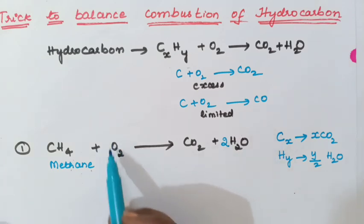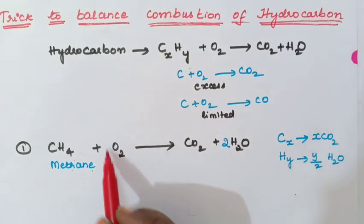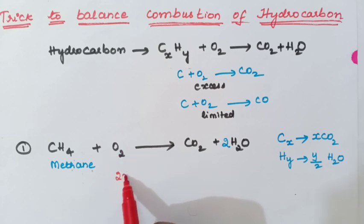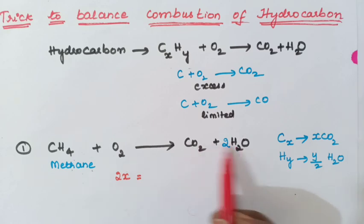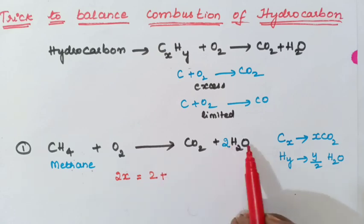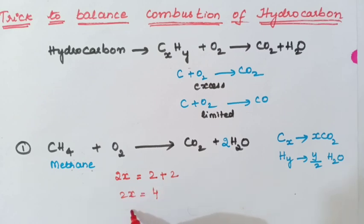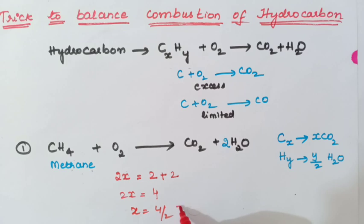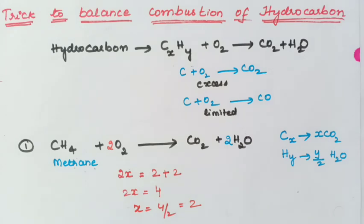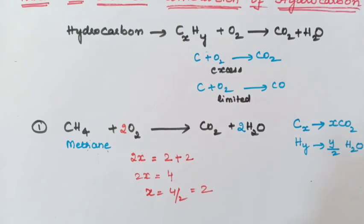Next is oxygen — how to balance oxygen. Always take the oxygen on the reactant side as 2X, since there are 2 oxygen atoms per O2 molecule. Set 2X equal to the total oxygen count on the product side: here 2 oxygens from CO2 plus 2 oxygens from the 2 water molecules gives 4. So 2X equals 4, therefore X equals 2. You will get 2 oxygen molecules. This is how we balance a combustion of hydrocarbon reaction.